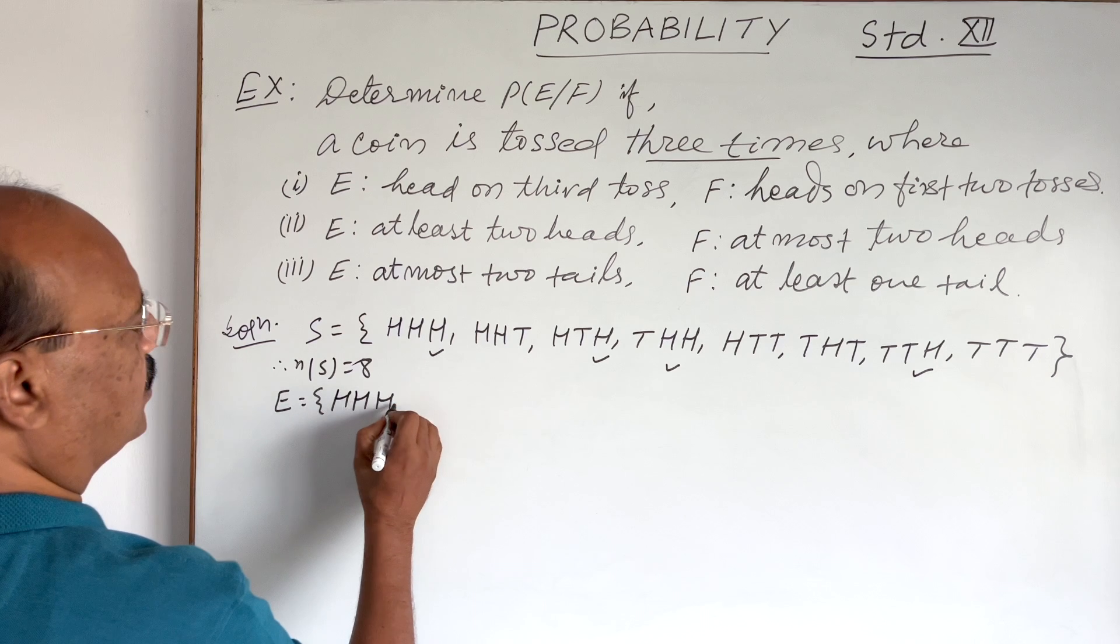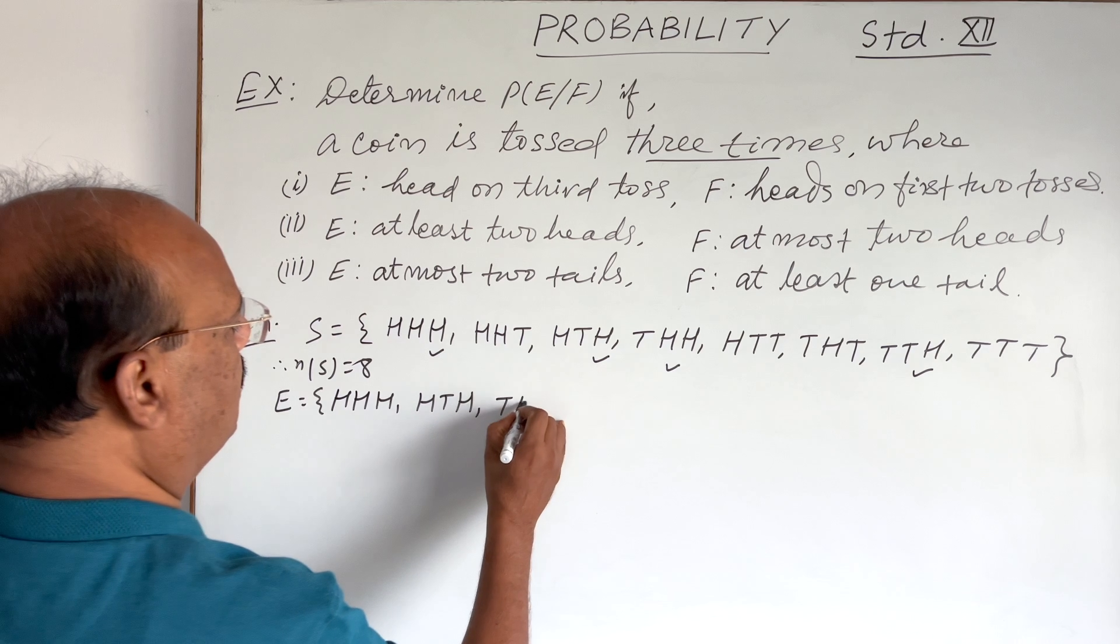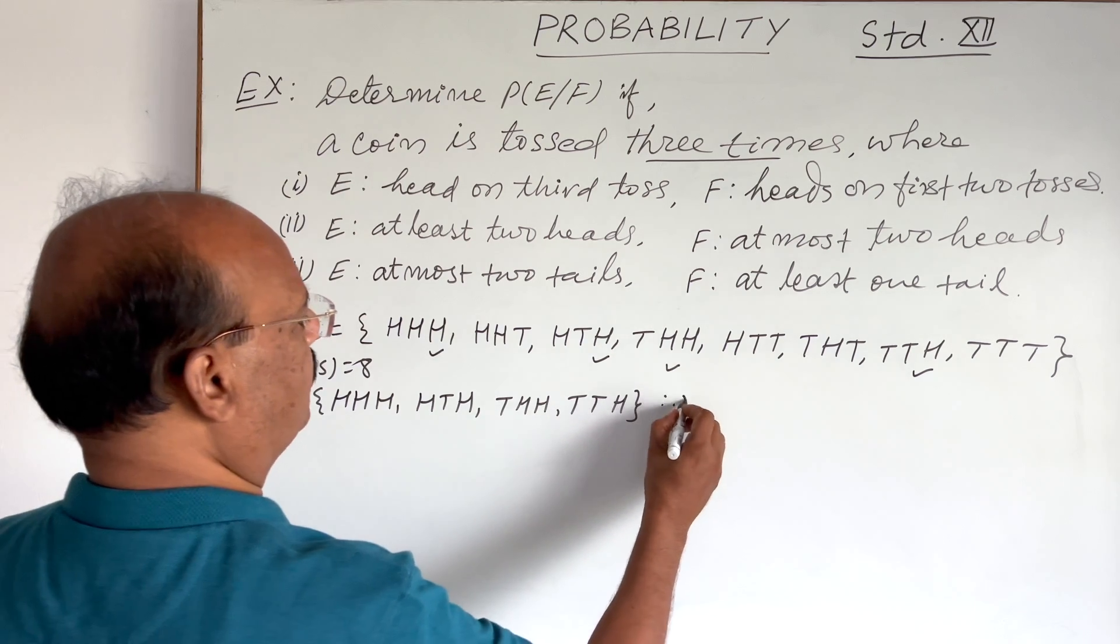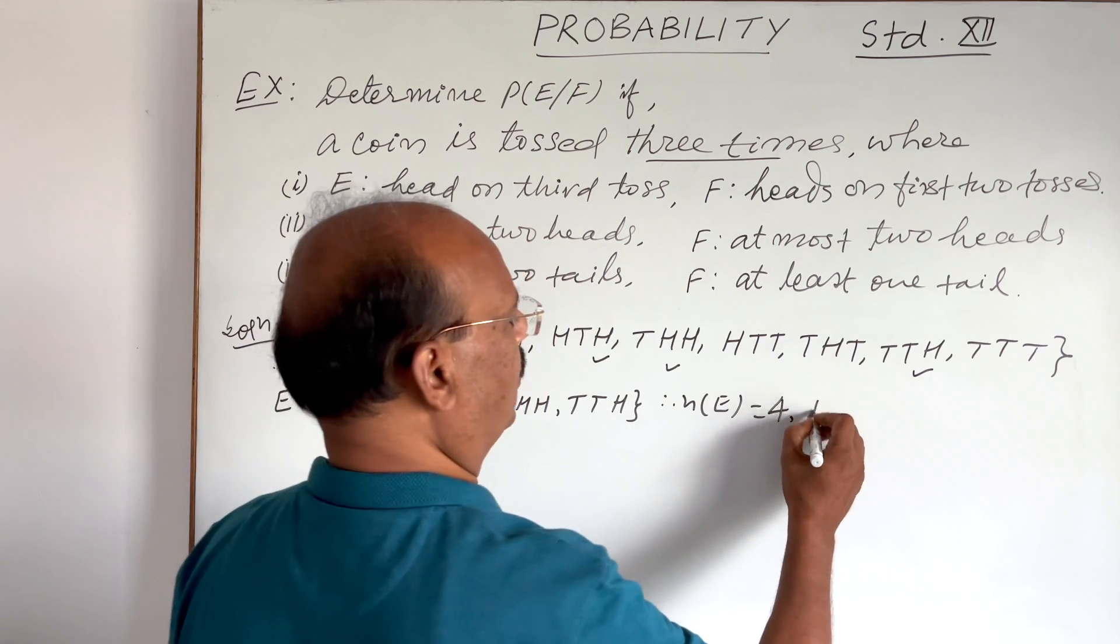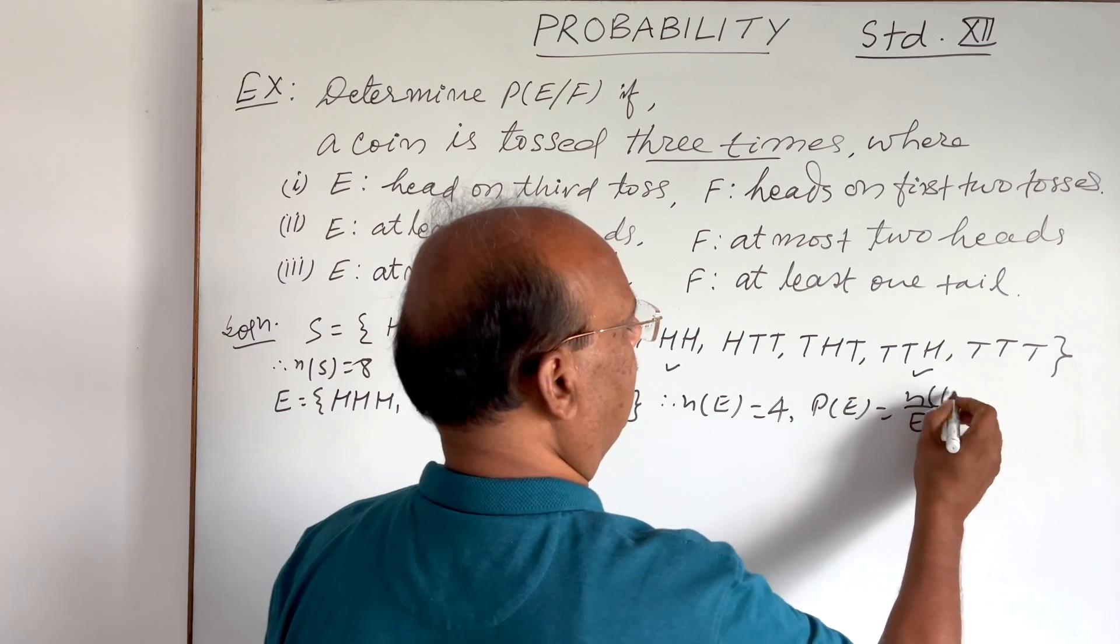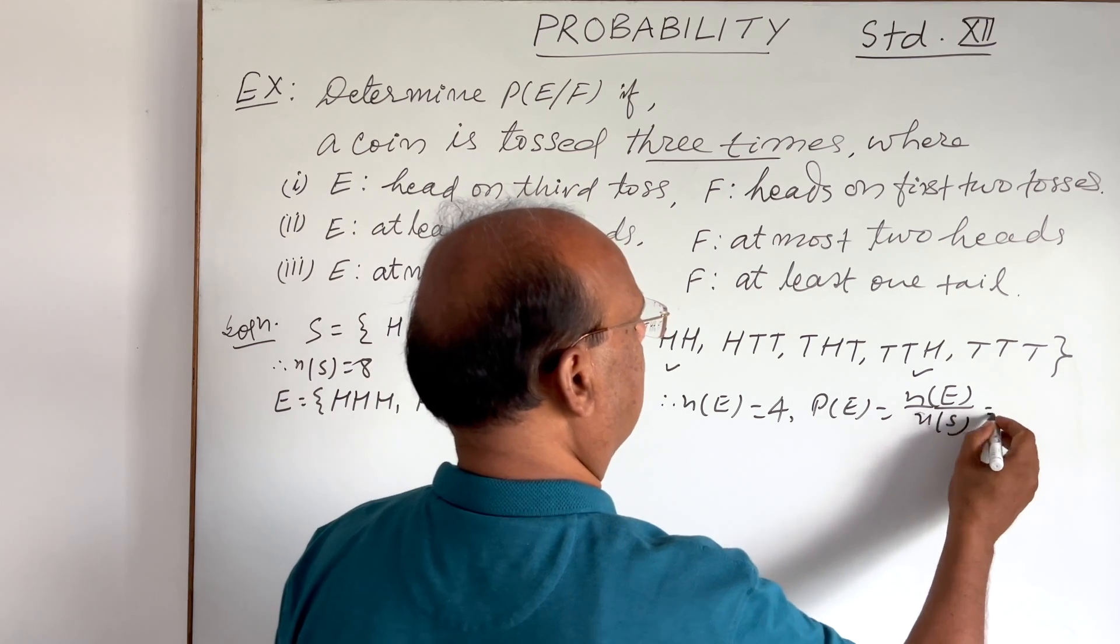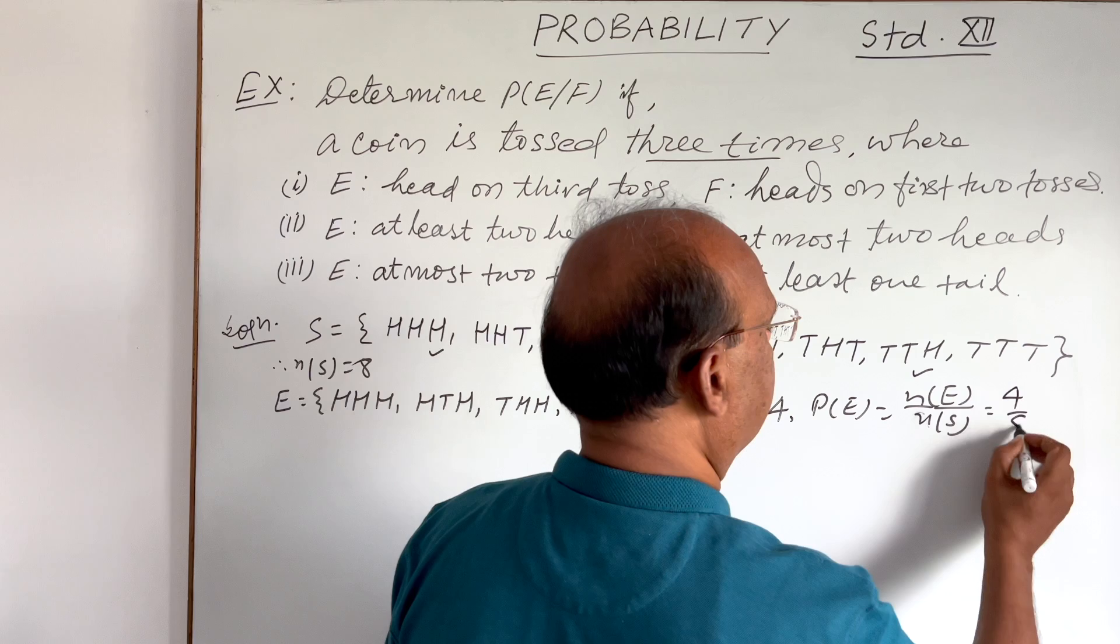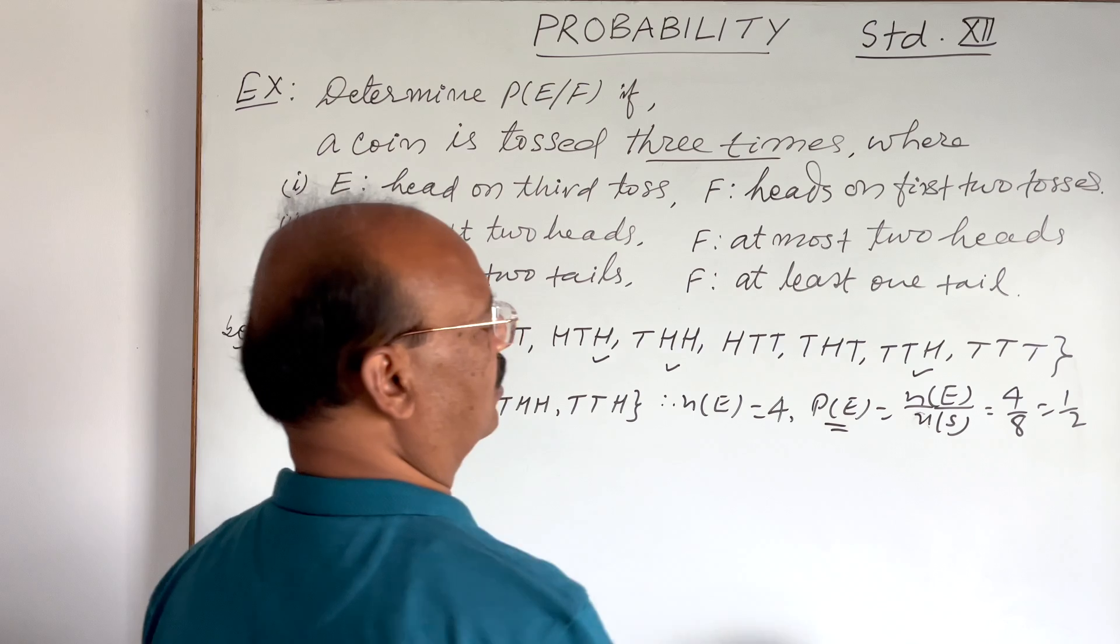HHH, HTH, THH, TTH. And probability of E is equal to N(E) by N(S). N(E) is four, and N(S) is eight. So this is four by eight, and this is equal to half. This is the value of probability of E.